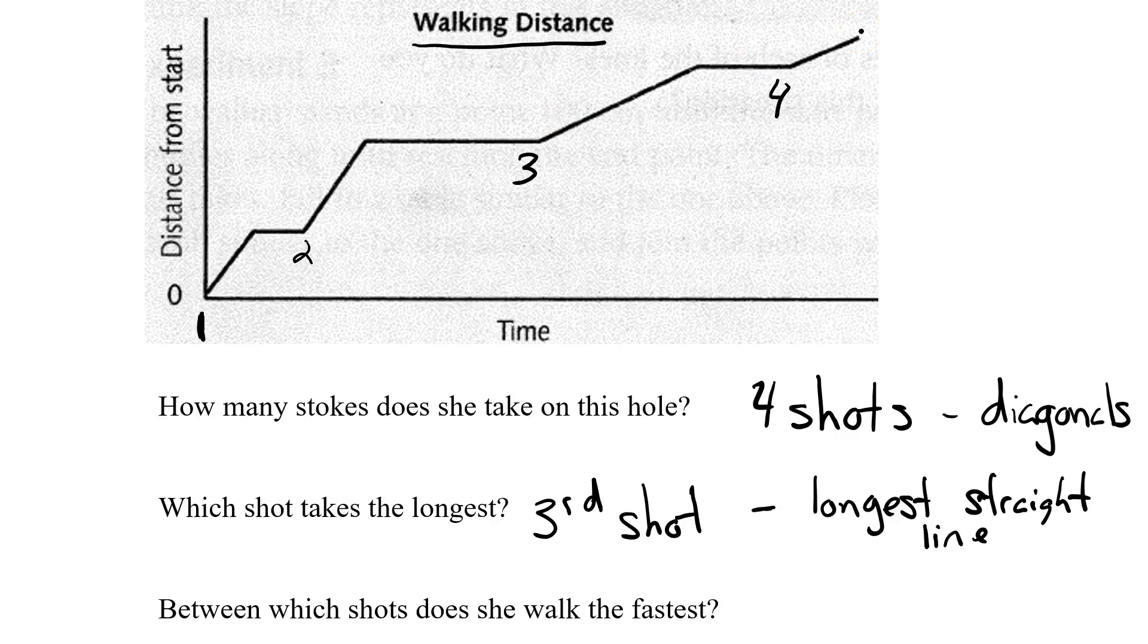Between which shot does she walk the fastest? So you've got to remember that walking is the diagonal lines. Now, the steepness of our diagonal lines is the key here. Time is passing. If I'm walking really, really fast, I'm going to walk a large distance in a short amount of time. So in this case, I want our steepest line.